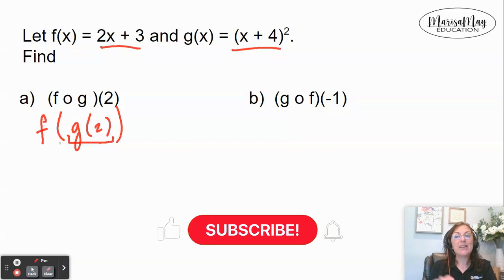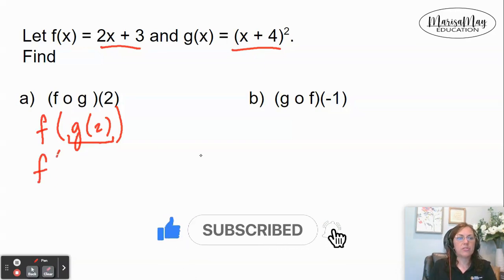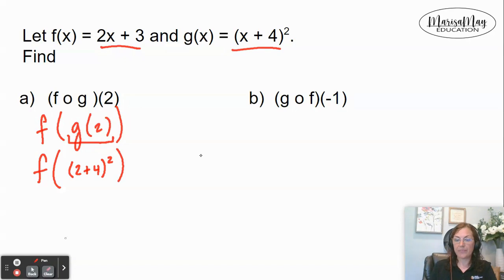So that means I've got (2 + 4)². Now 2 + 4 is 6, and 6² is 36. So now I'm looking for f(36).